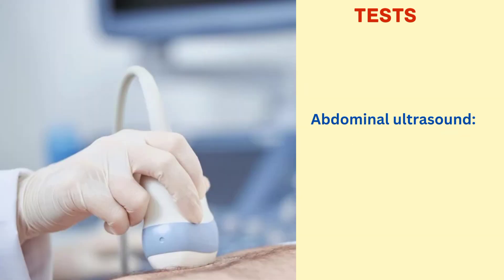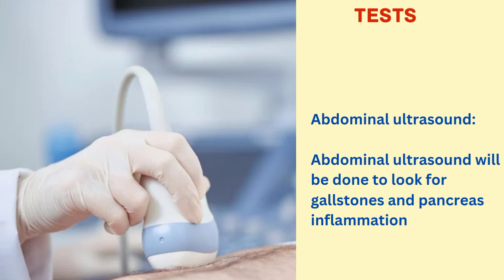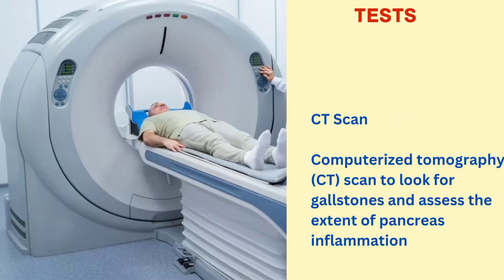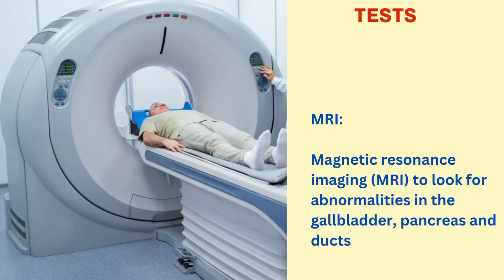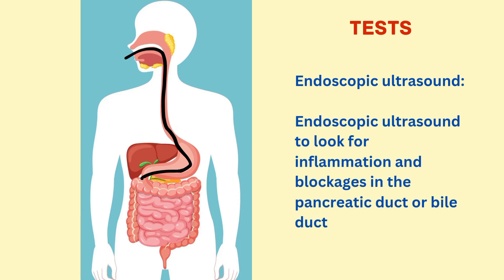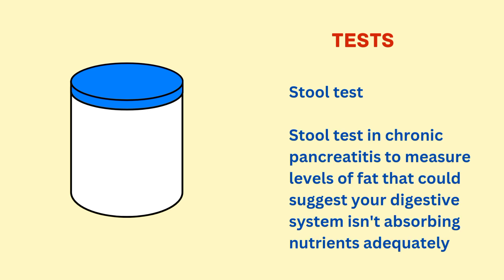The next test is the abdominal ultrasound, done to look for gallstones and pancreas inflammation. Next is the CT scan — computerized tomography scan — to look for gallstones and assess the extent of pancreas inflammation. Next is the MRI test — magnetic resonance imaging — to look for abnormalities in the gallbladder, pancreas, and ducts. Next is the endoscopic ultrasound, to look for inflammation and blockages in the pancreatic duct or bile duct. Finally, the stool test in chronic pancreatitis measures levels of fat that could suggest your digestive system isn't absorbing nutrients adequately.